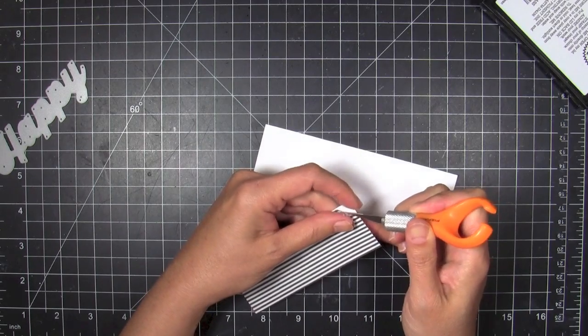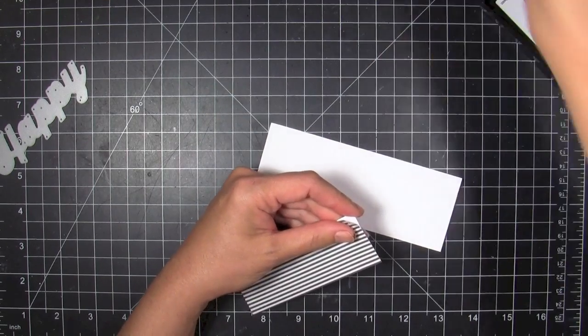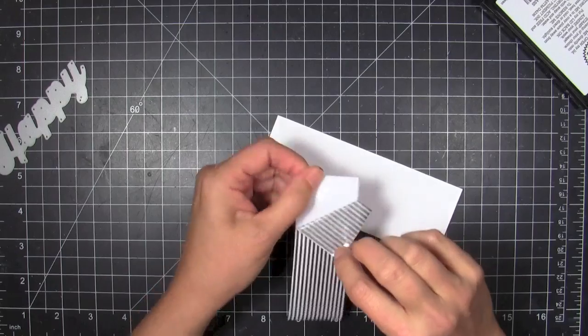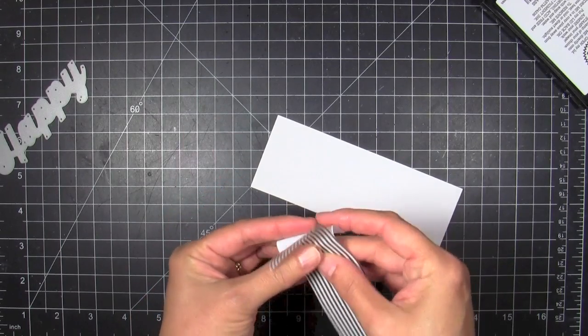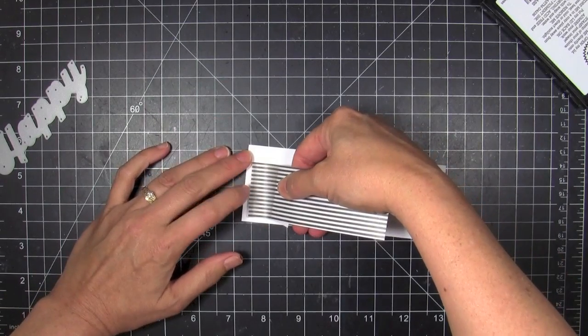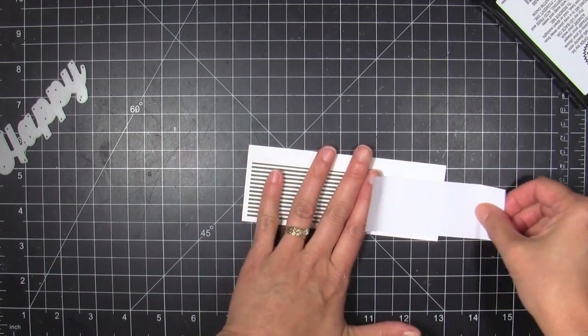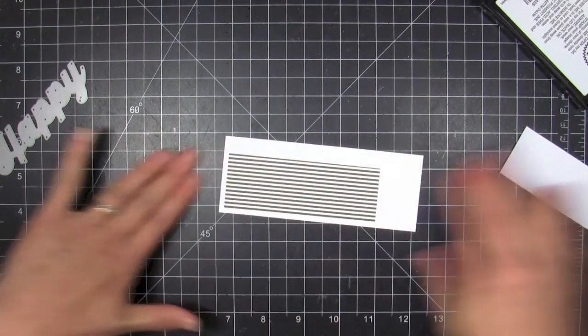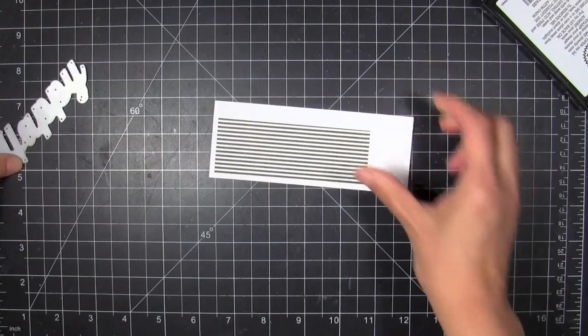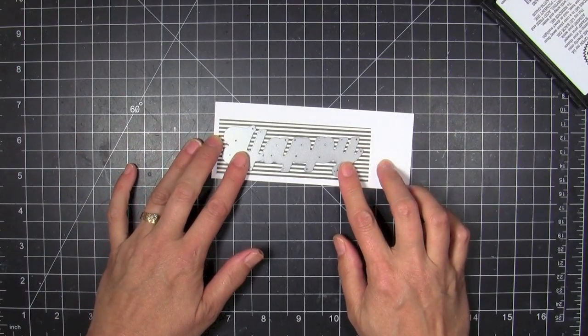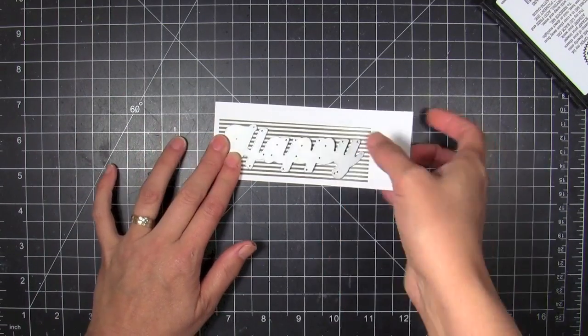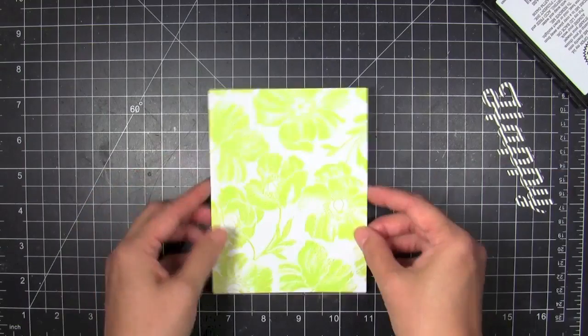I'm gonna go ahead and separate the liner from the washi tape by using my craft knife. That's usually the easiest way I can get these two separated. Then we'll go ahead and smooth that out onto a piece of scrap white cardstock and then I can go ahead and set my die on top of there and run that through the machine.